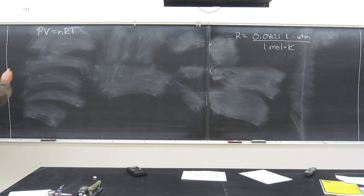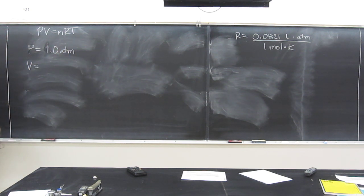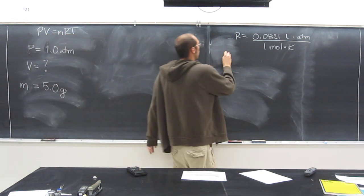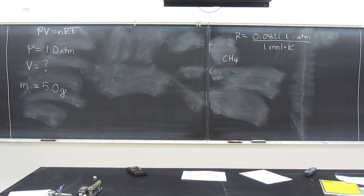So let's write down what we know. P, do we know that? No. V? No. That's what we're looking for. N? Do we know that? Well, so we know the mass, right? So we don't know n, but we can get n from m. So let's write down m for right now. 5.0 grams of methane. In fact, let's write down that we have methane too. CH4. And R, of course, we know. And T, we know too. 25 degrees Celsius.